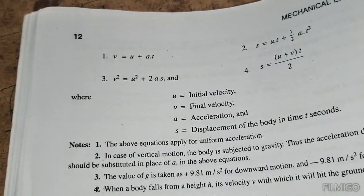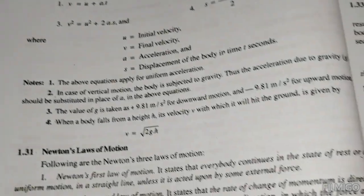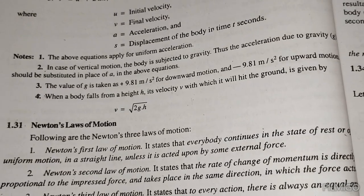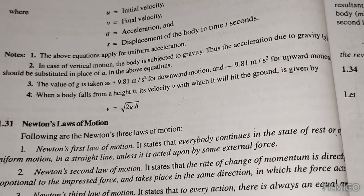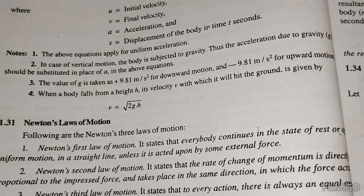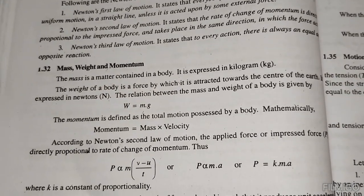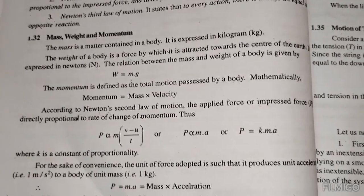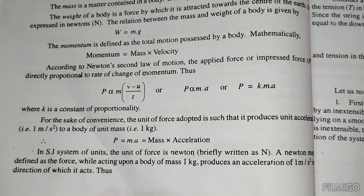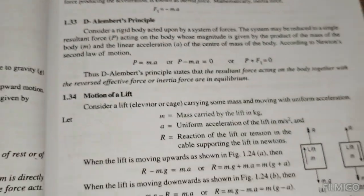Equations of linear motion: v equals u plus at; v squared equals u squared plus 2as; s equals ut plus half a t squared; s equals u plus v divided by 2 times t. The value of g is taken as 9.81 m per second squared. For vertical motion: v equals square root of 2gh. Momentum equals mass times velocity. Newton's second law: F equals ma, and for opposing motion F equals minus ma.